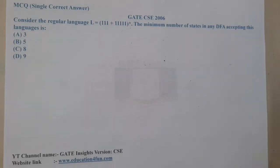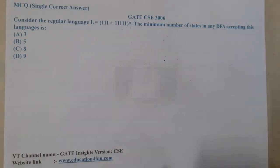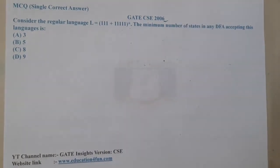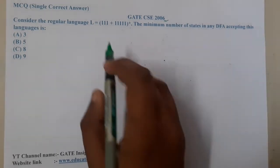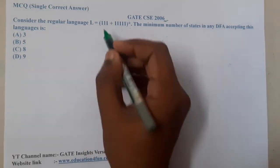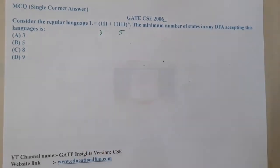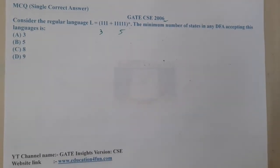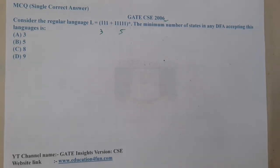Hello guys, we are back with our next lecture. This question belongs to GATE CSC 2006. The given question is: consider the regular language L = (111 + 11111)* (triple one plus five ones, whole star). The minimum number of states in any DFA accepting this language is — they are asking what is the minimum number of states.